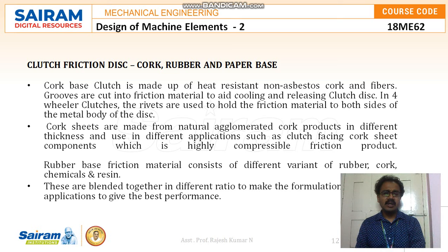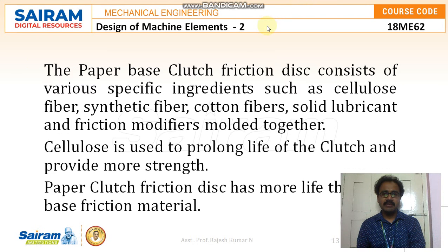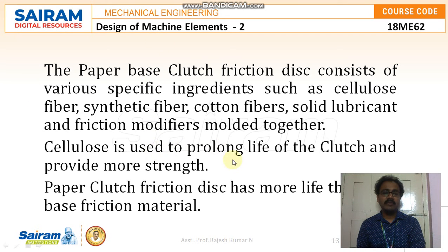Cork sheet is a highly compressible friction product. Rubber base friction material consists of different variants of rubber, chemicals, and resin, blended together in different ratios to make the formulation for different applications to give the best performance. Moving to the paper base clutch friction disc — it consists of various specific ingredients such as cellulose fiber, synthetic fiber, cotton fibers, solid lubricant, and friction modifiers, molded together. Cellulose is used to prolong the life of the clutch and provides more strength.